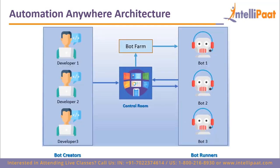To summarize, here is a simple representation of the Automation Anywhere architecture. The developer builds the bots in the bot creator, while the control room has all the bot analytics and keeps track of the status of each bot. The bots are run in the bot runner, and the bot farm lets the bot runner borrow servers as and when needed.